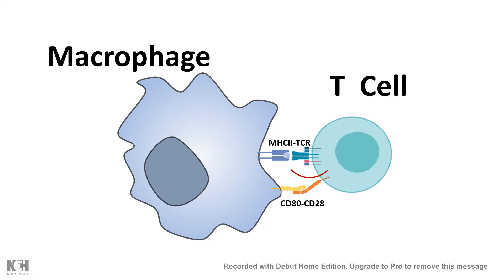Other than that, there are co-stimulatory signals which come from CD80 expressed on the antigen-presenting cell and CD28 expressed on the surface of the T-cell. Combined, these two interactions give the necessary signal to the T-cell nucleus for its activation.